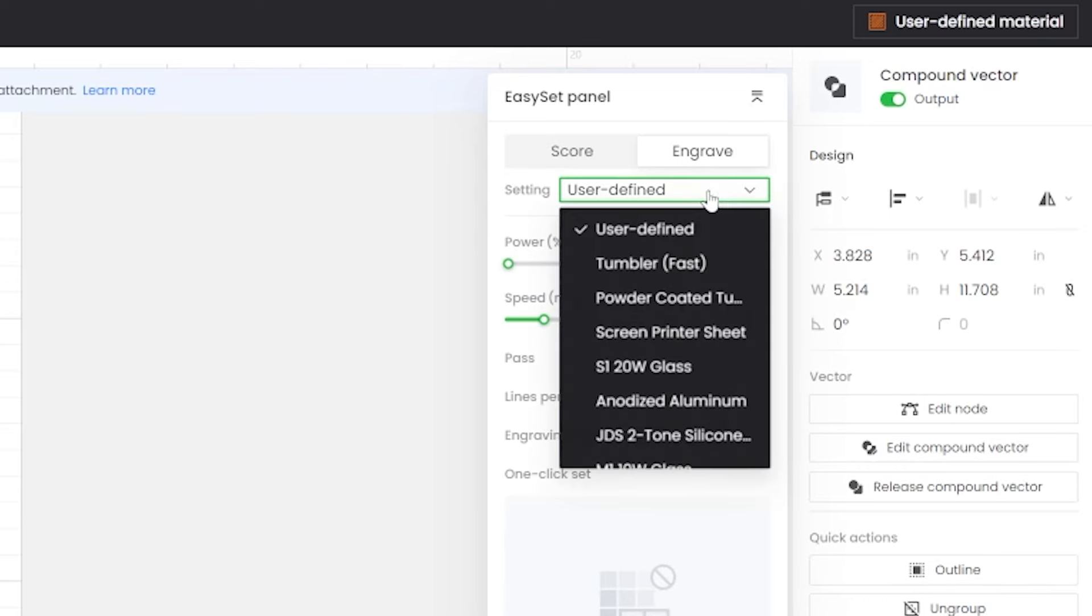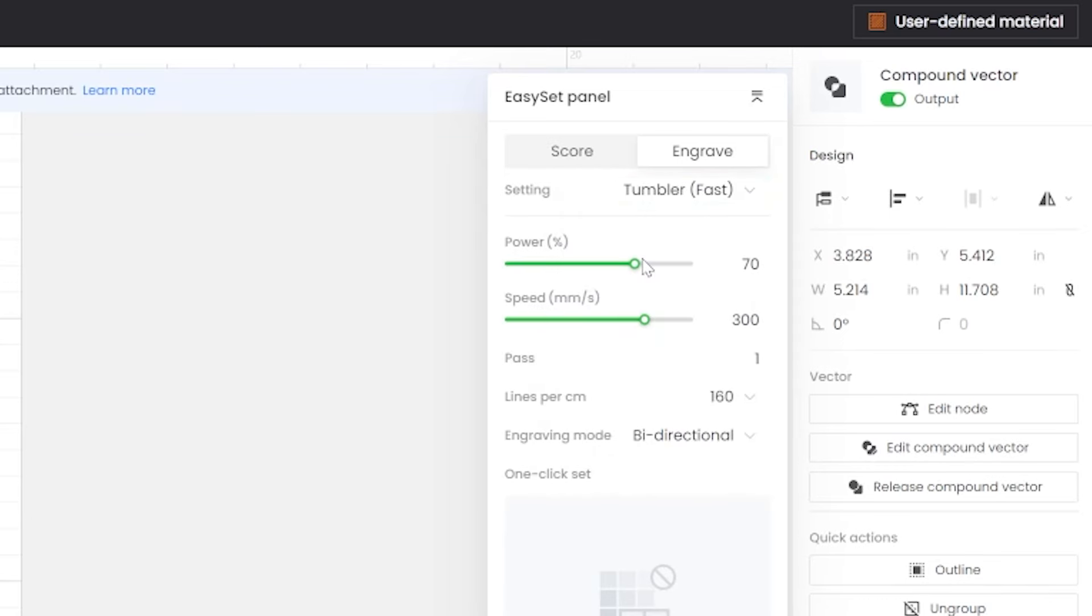Settings will be the next bit of critical data that you need to input. Xtool has a material settings library that is fairly robust. However, each individual laser is different, so it's best to do your own test prior to starting a big project. I always buy an extra tumbler to just mess it up in testing. As a reminder, I'm using a 20 watt laser. My settings for this tumbler are going to be 70% power, 300 millimeters per second for the speed, and 160 lines per centimeter for the resolution.